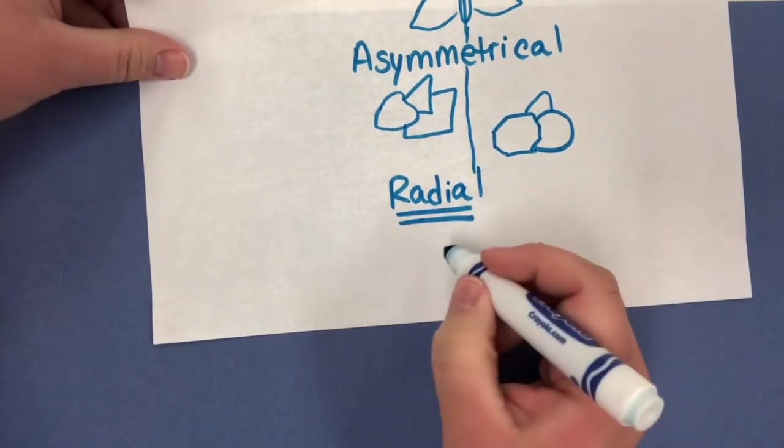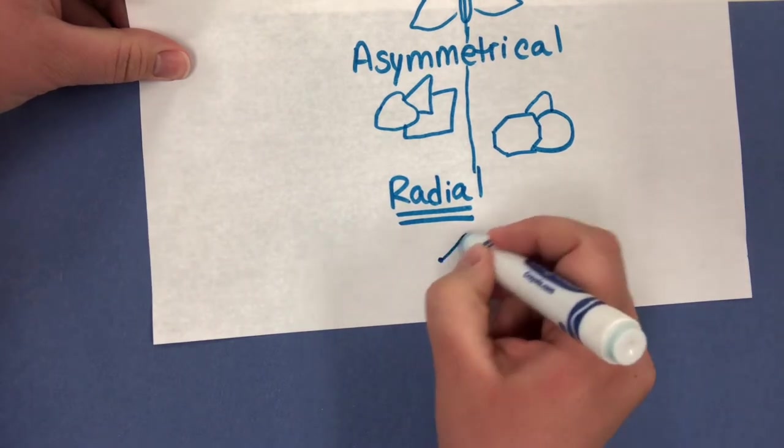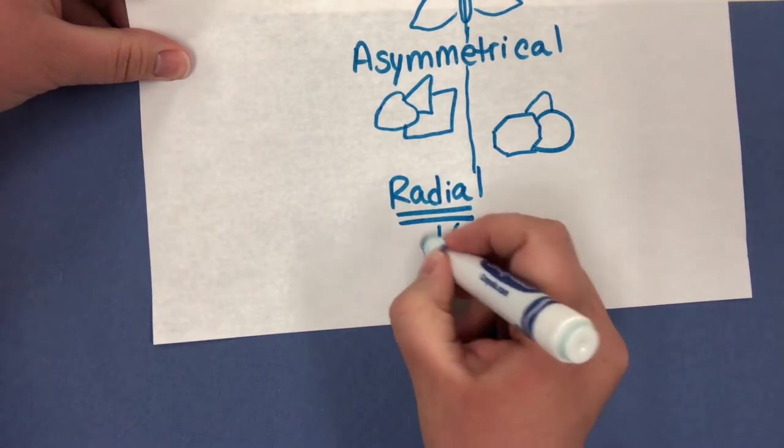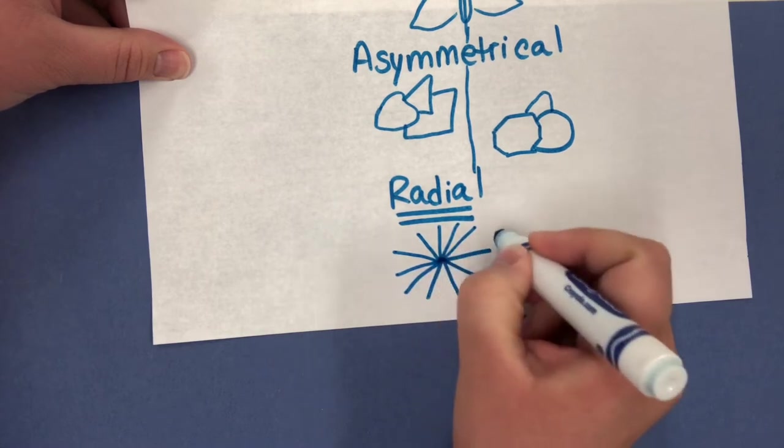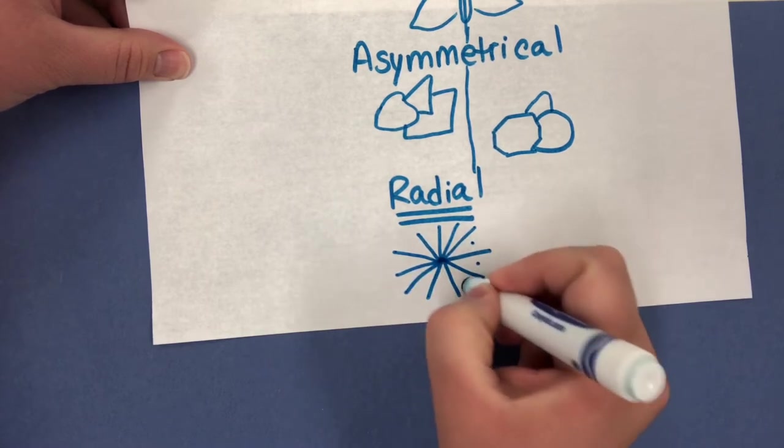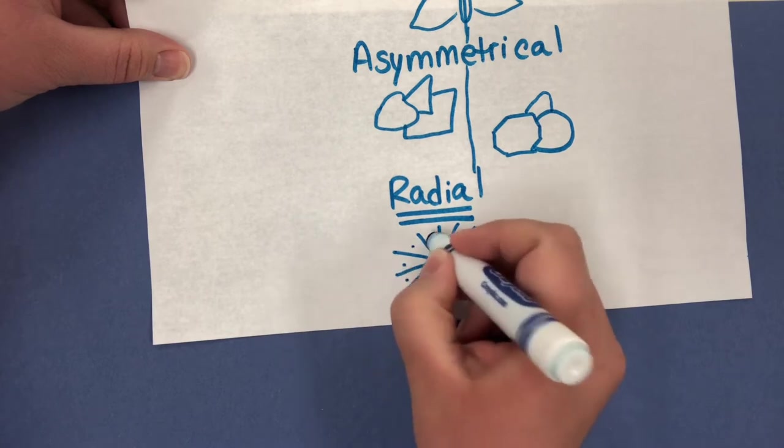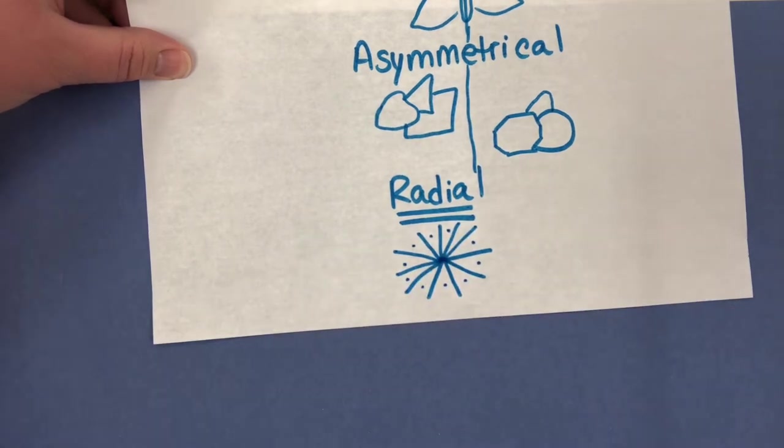Radial balance is when you have all the elements. So lines, shapes, or colors coming from the middle point. So everything in the artwork is coming towards or from that middle point. And that is radial balance.